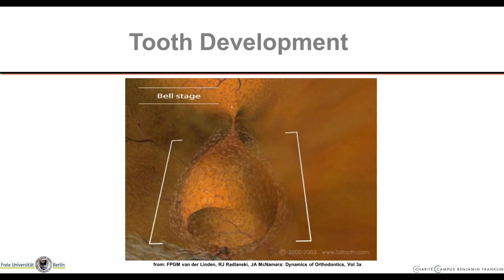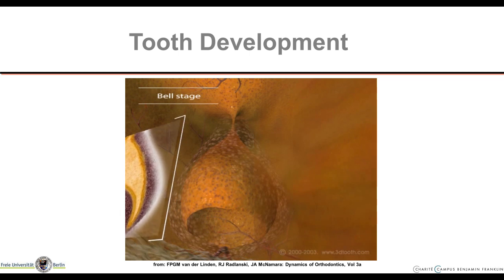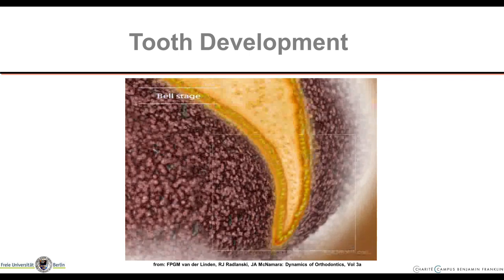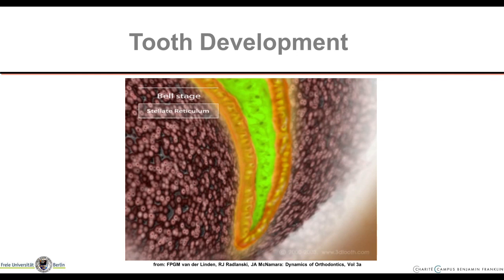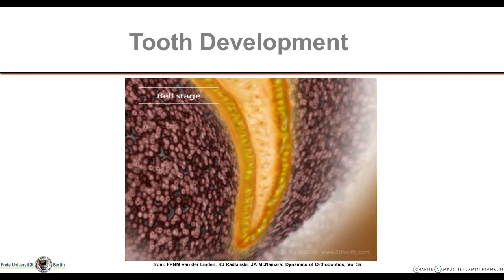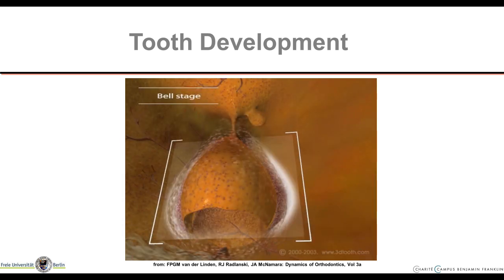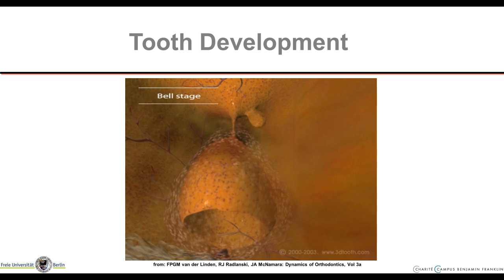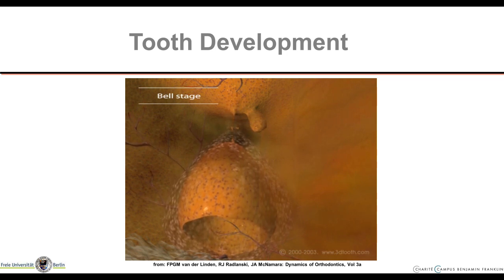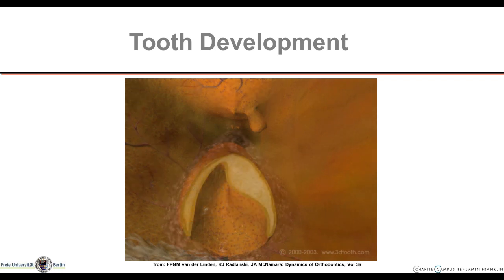If we cut the bell stage open, we can see the stellate reticulum made up by epithelial cells. They are star-shaped and form a network with extracellular fluid, separating the outer from the inner enamel epithelium. On the inner enamel epithelium there is also a very thin layer, the stratum intermedium, which only plays a role later after tooth eruption. At the rim of the tooth bell, the outer and inner enamel epithelium come together and form the cervical loop, which is important for root formation. The tooth bell now detaches from the dental lamina, and above you can already see the forming bud of the following permanent tooth.